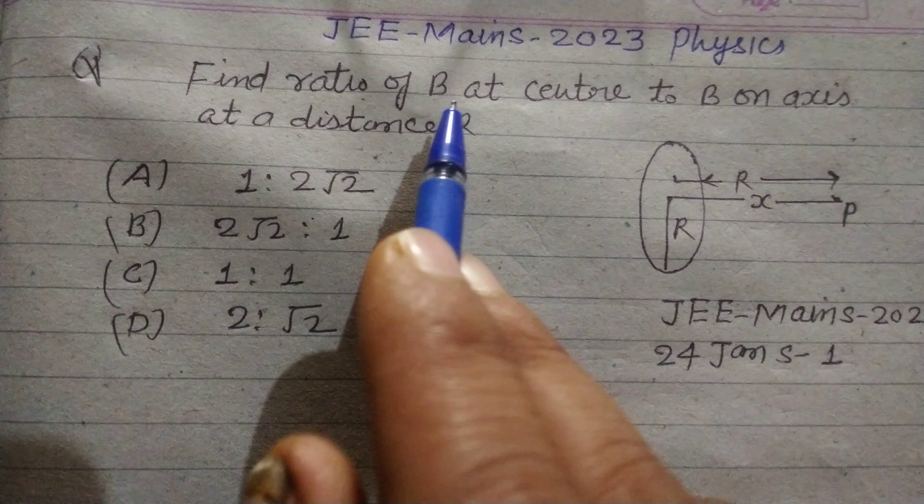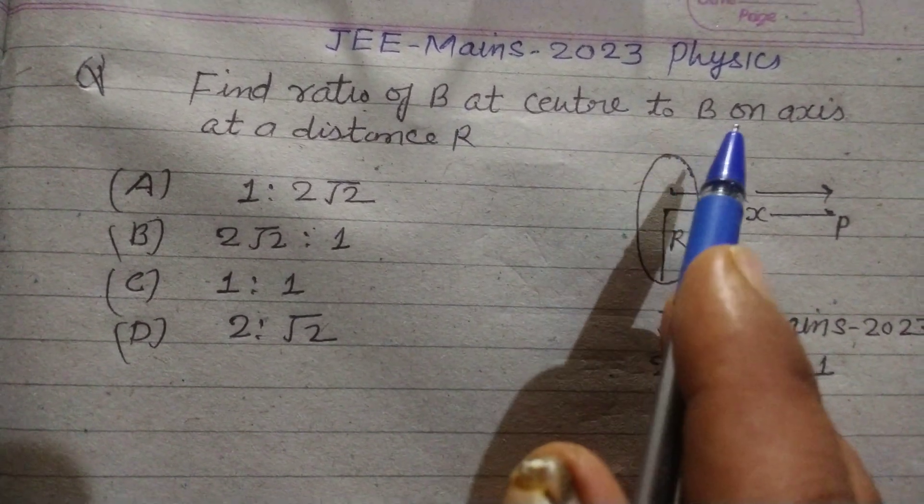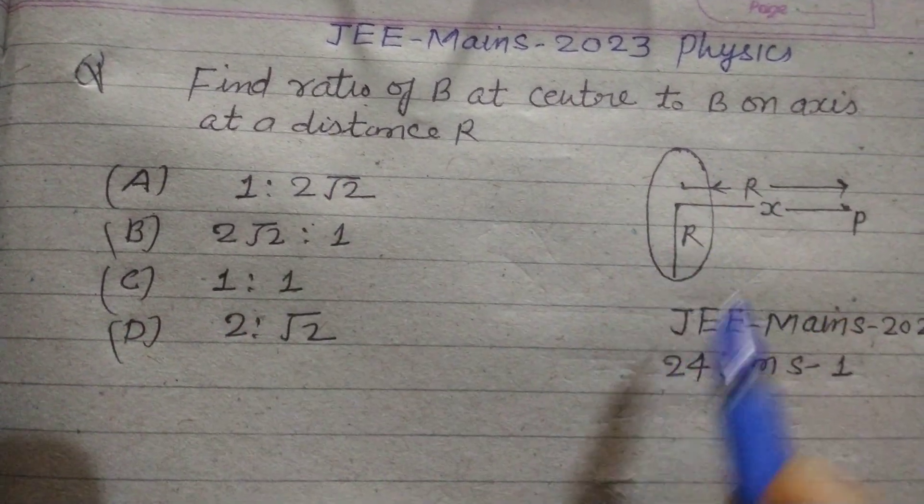Find the ratio of magnetic field B at center to B on axis at a distance R of the coil.